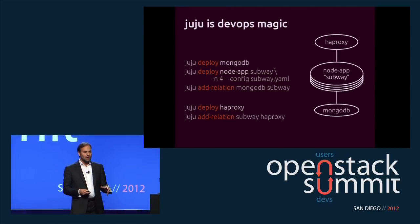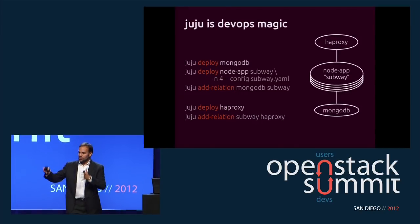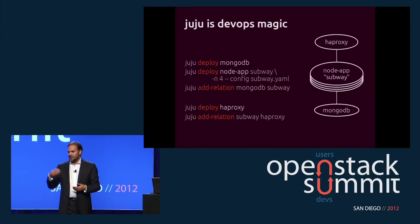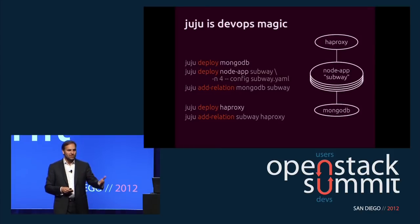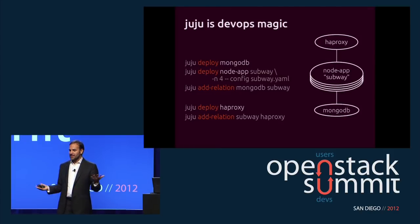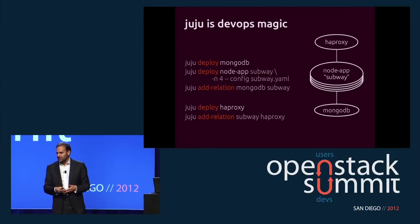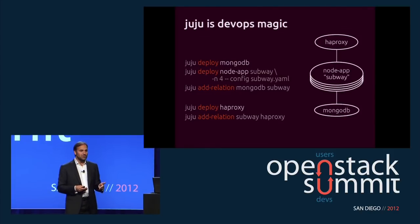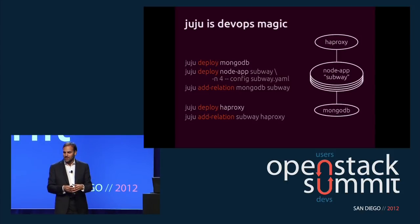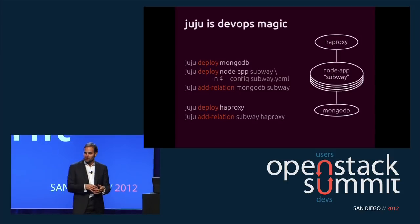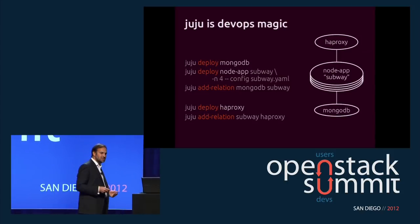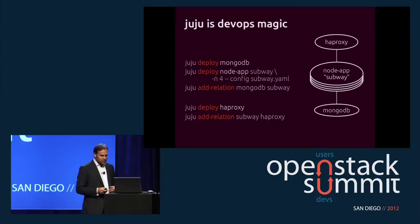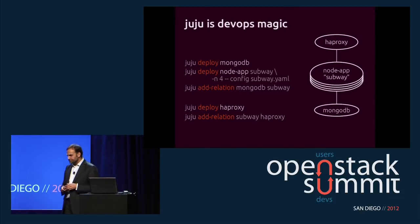The productivity and velocity improvements for developers inside companies, when they get an OpenStack private cloud and start using this kind of service orchestration, are dramatic. For example, a Node app behind a load-balancing proxy talking to Mongo comes down to five commands — deploying each of the services, connecting them, and telling one service to scale out. So Juju makes things really, really easy.